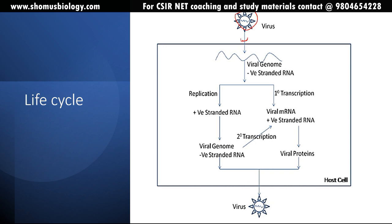Now let's look at the life cycle of measles virus. The virus enters by proper interaction with the receptor on the surface of the cell. Once inside, the virus delivers its negative-sense RNA genome into the cytosol. Replication of the minus-strand is performed to make plus-strand RNA. This minus-strand is also transcribed into viral mRNAs (plus-strand RNAs), which are then used to make viral proteins — this is called first-degree transcription.